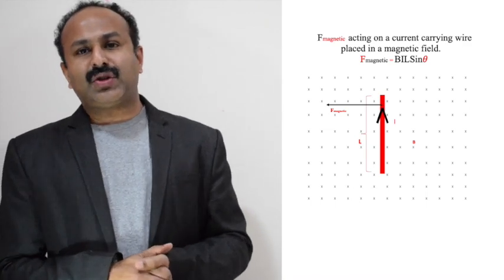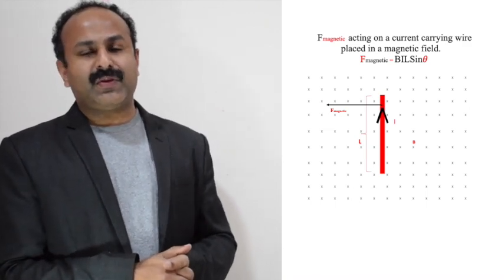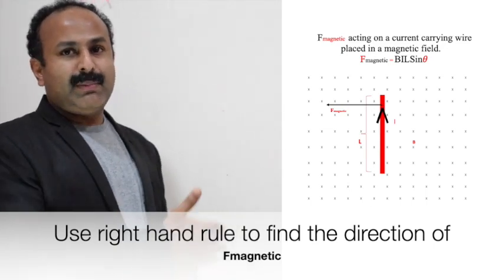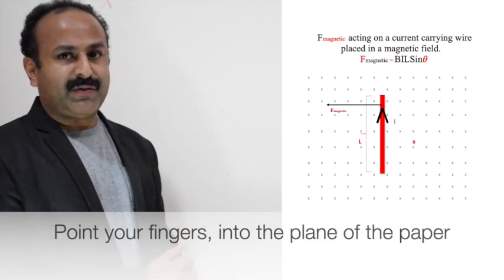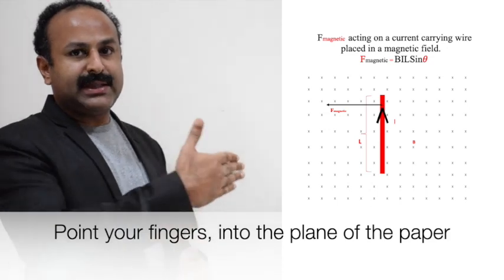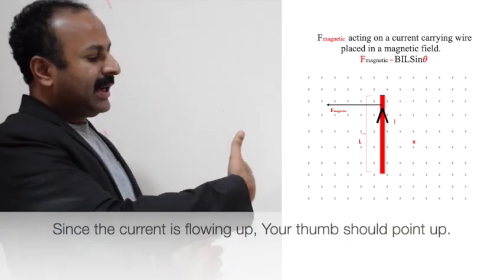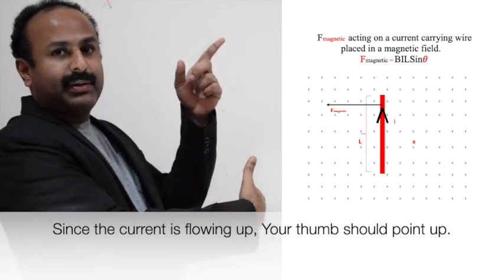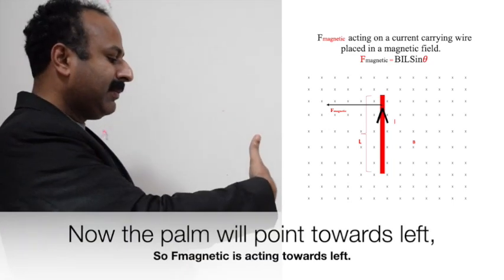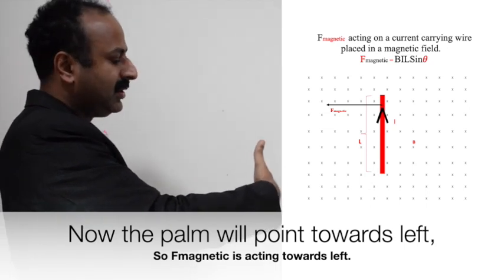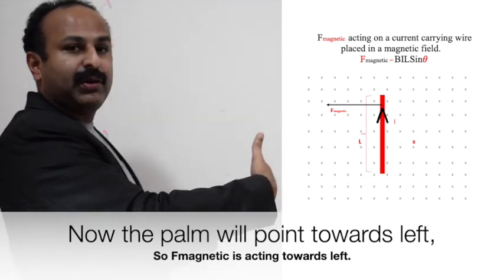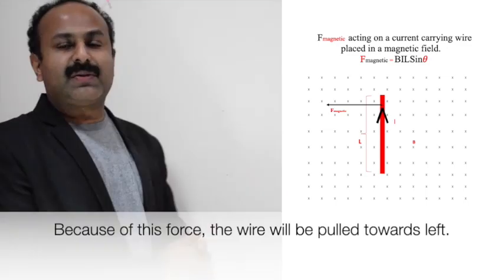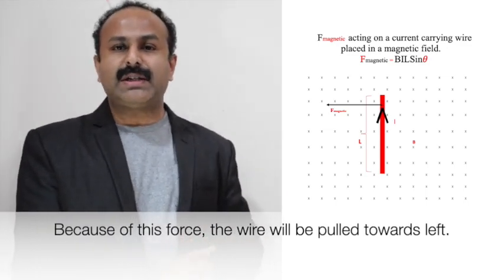Now I am going to represent the force acting on this wire. For this we can use the right hand rule. Here the magnetic field is pointing into the plane of the paper, so you point your fingers into the plane of the paper. The current is flowing up, so your thumb is pointing up. You can see your palm is pointing towards left, so the force acting on the wire is towards left and the wire will be pulled towards left.